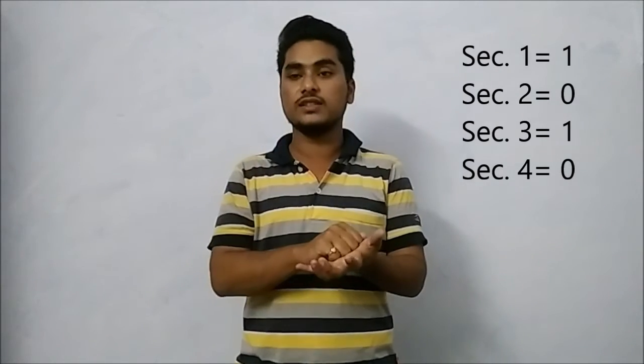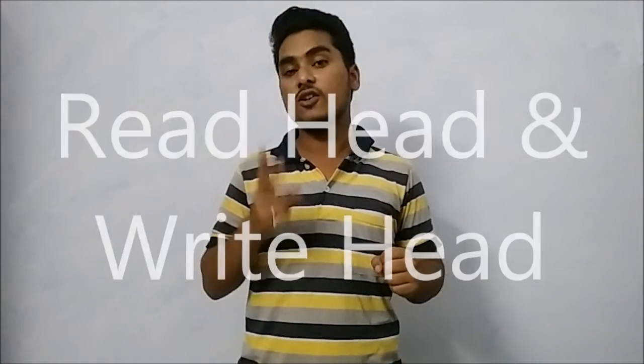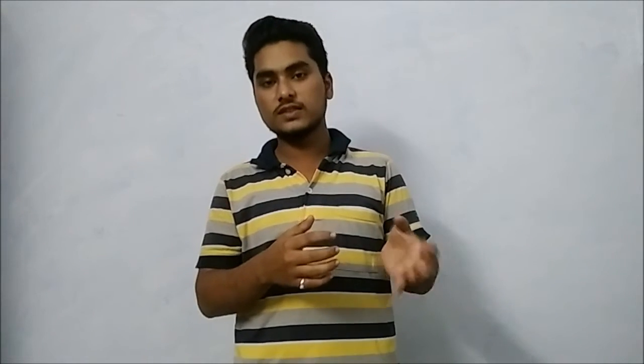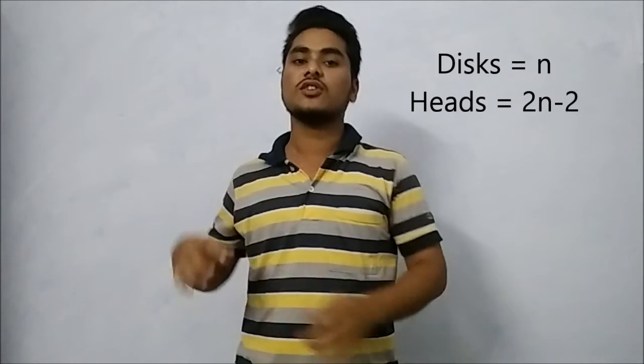All the writing and reading functions from the disk are done by individual heads called the read head and write head. Each disk will have its own read head and write head. Basically, if we have a hard disk with 10 disks, we will have 8 read/write heads, because the top surface of the topmost disk and the bottom surface of the bottommost disk are not used. Therefore, if we have n disks, we will have 2n minus 2 read/write heads.